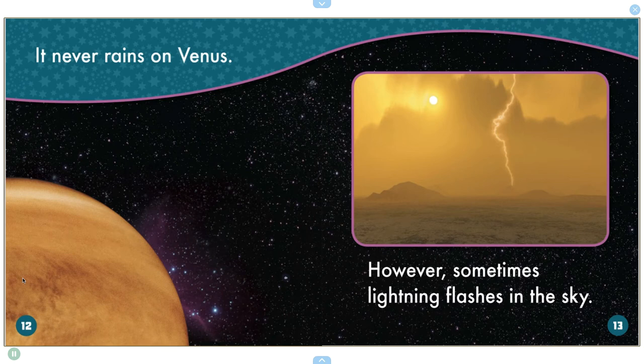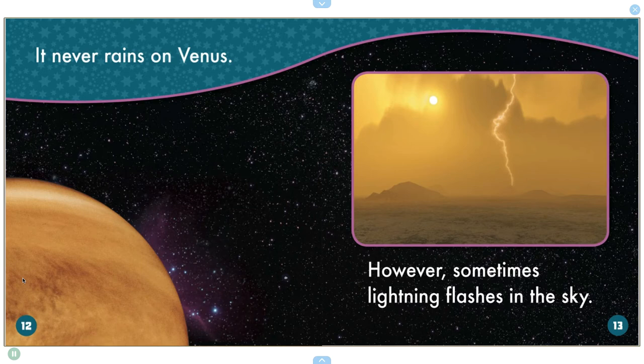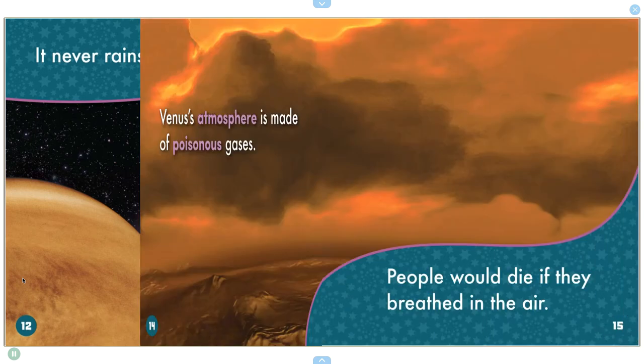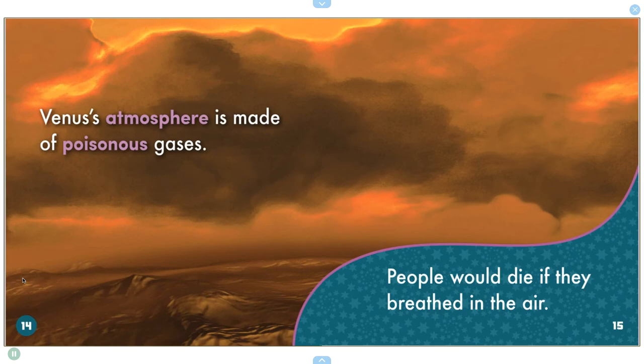However, sometimes lightning flashes in the sky. Venus's atmosphere is made of poisonous gases. People would die if they breathed in the air.